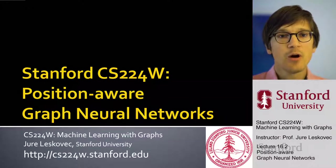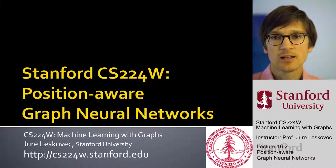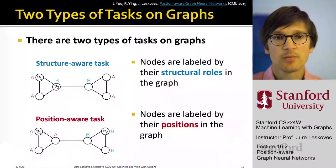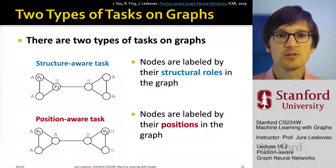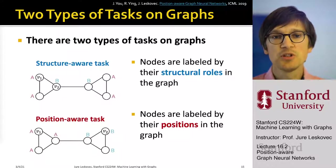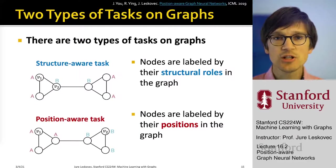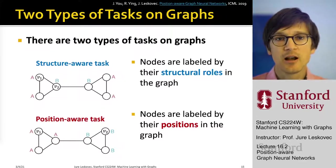Let me now tell you about position-aware graph neural networks that are going to solve part of the problem. There are two types of tasks on graphs: structure-aware tasks and position-aware tasks. This is to illustrate how graph structure may affect the underlying labels.